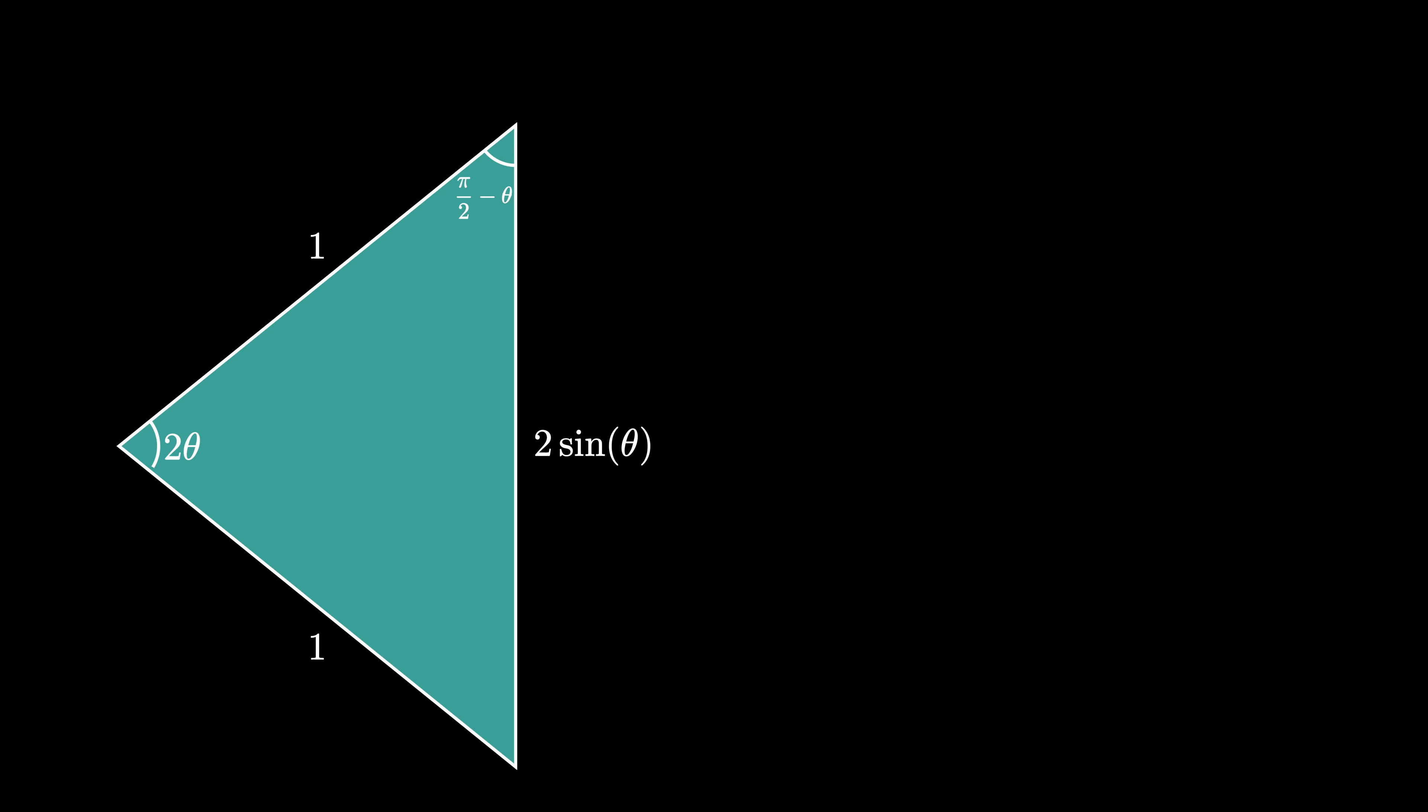We can use this triangle in two different ways. First of all, from the Law of Sines, we see that sine of 2 theta divided by 2 sine of theta must equal the sine of pi over 2 minus theta divided by 1.